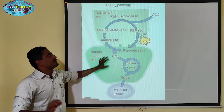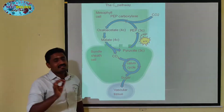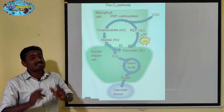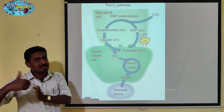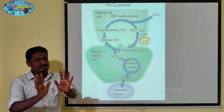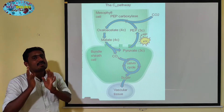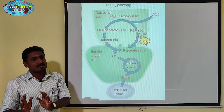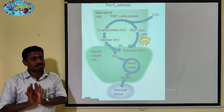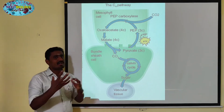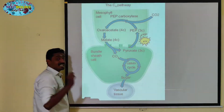In the bundle sheath cells, RuBP is present in the agranal type of chloroplast. Granal type of chloroplast is in the mesophyll and contains PEP; agranal type is in bundle sheath and contains RuBP. The CO2 released is fixed by RuBP, entering the C3 cycle, which is the Calvin cycle.